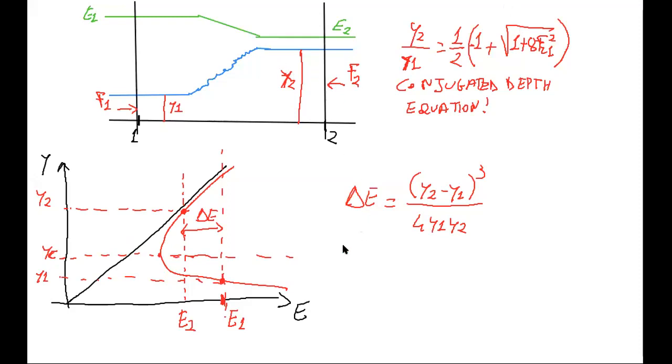It's very important to stress something. When we have a rapidly varied flow, we are not interested anymore in knowing the length delta L. We don't want to know anymore this quantity because this is very small if compared to our gradually varied flow. In a gradually varied flow, we have a large transition zone; here we have a very small transition zone.